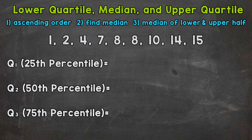Let's jump into our first example, where we work with a data set with an odd number of numbers. We need to start by ordering our data from least to greatest, so ascending order. In this example, the data is already in order, but if your data set is not in order, make sure ascending order is the first thing you do. Next, we need to find the median — also referred to as Q2, which means quartile two, or the 50th percentile — the middle of our data.